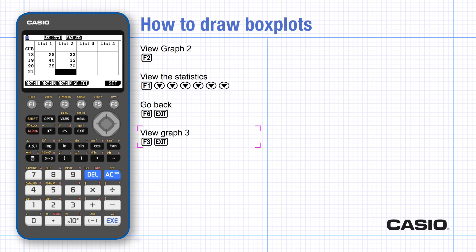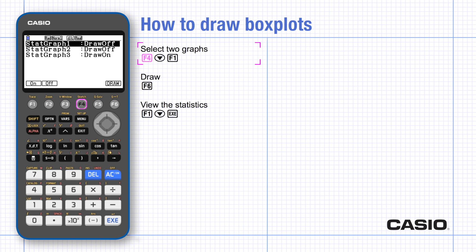To compare the two box plots by putting them together on the same axes, change which graphs are selected. Press select and scroll down to switch graph two to on. Graph three is already on.